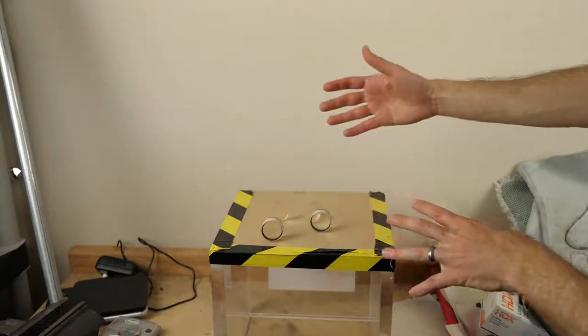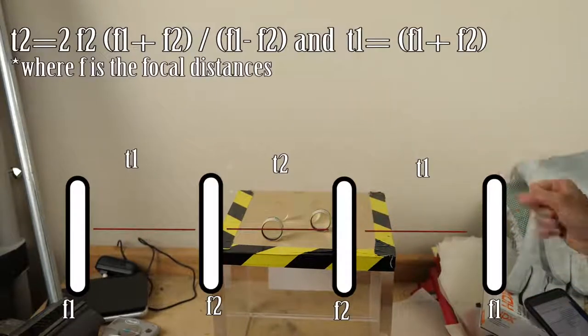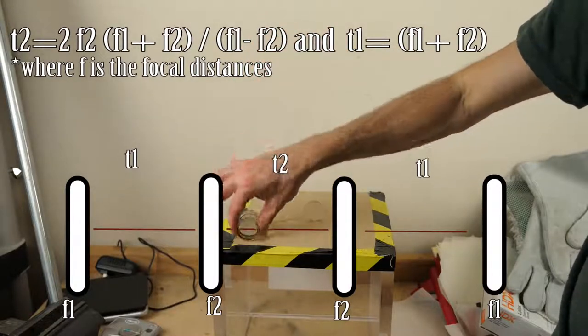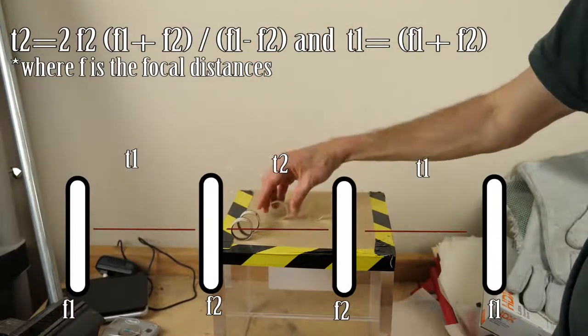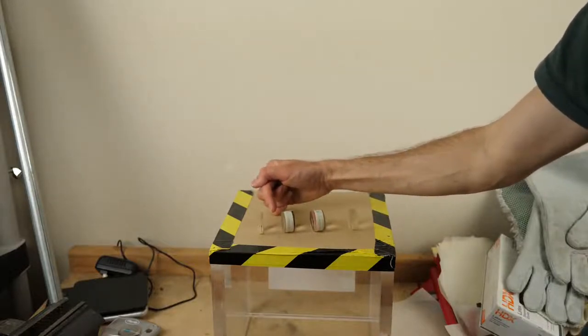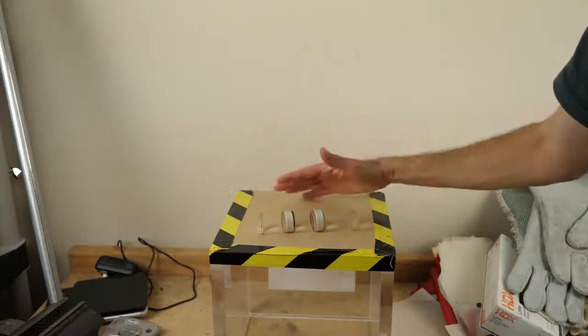And you just set them up according to this equation and their focal points. So you keep these two lenses, these big ones we'll call F2 and these small ones we'll call F1, but there will be a point between these two lenses where something is invisible except for in the very center of it. Here's what I mean.